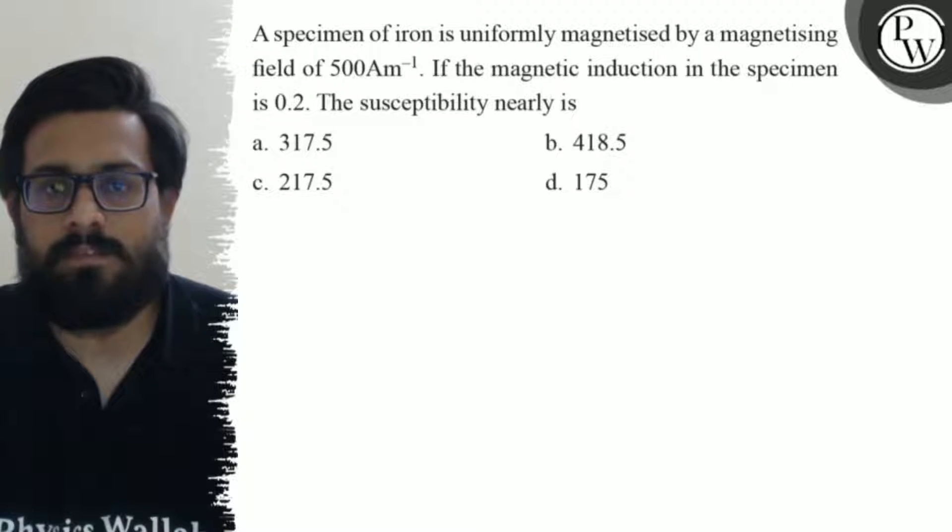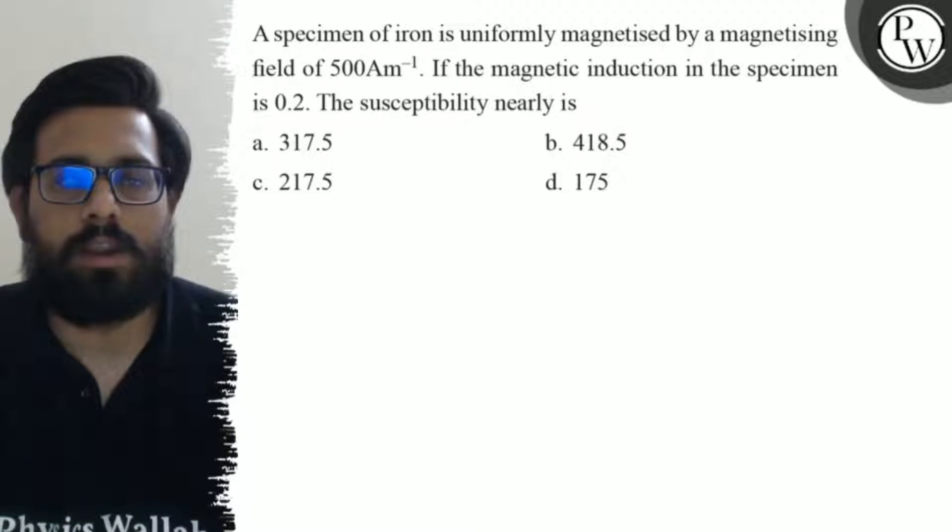First option is 317.5, second option is 418.5, third option is 217.5, and fourth option is 175.